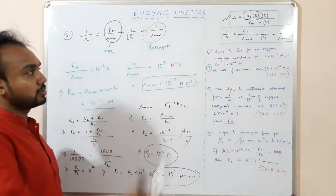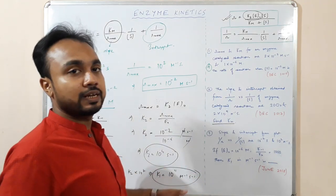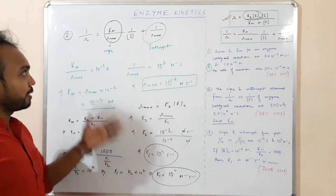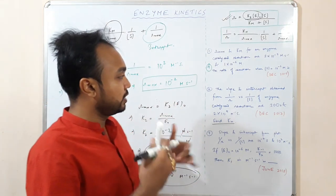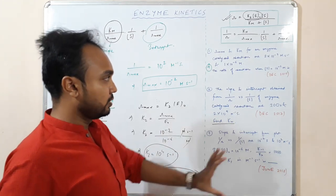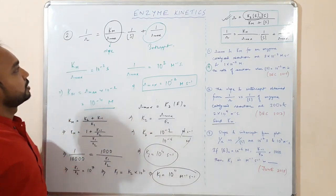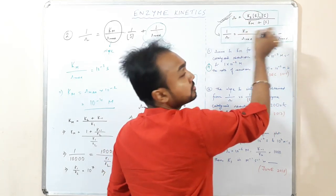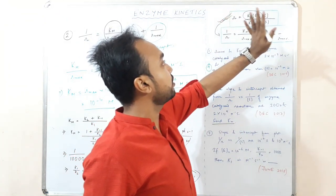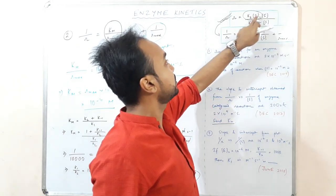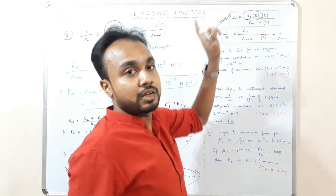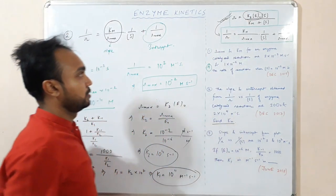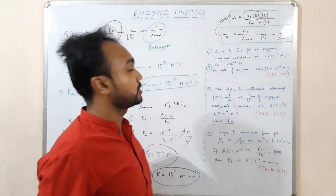If you can solve these 2-3 types of numericals, you will be able to handle formula-based numericals in CSIR NET. From enzyme kinetics, this type of numerical is always expected. Remember the formula: R = K₂·E₀·S / (Km + S), where K₂·E₀ = Rmax, Km = (K₂ + K₋₁)/K₁, K₂ is the turnover number, and K₂/Km is the catalytic efficiency.